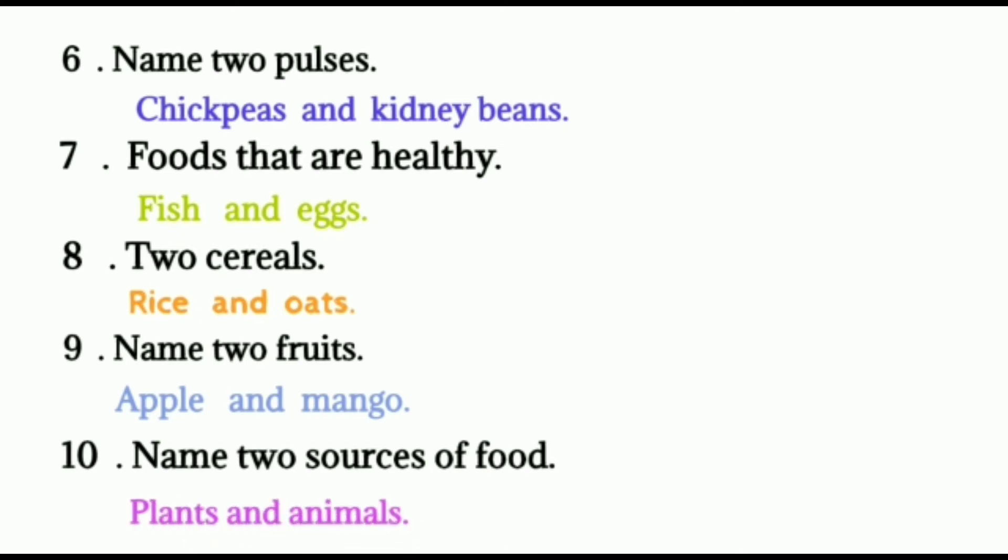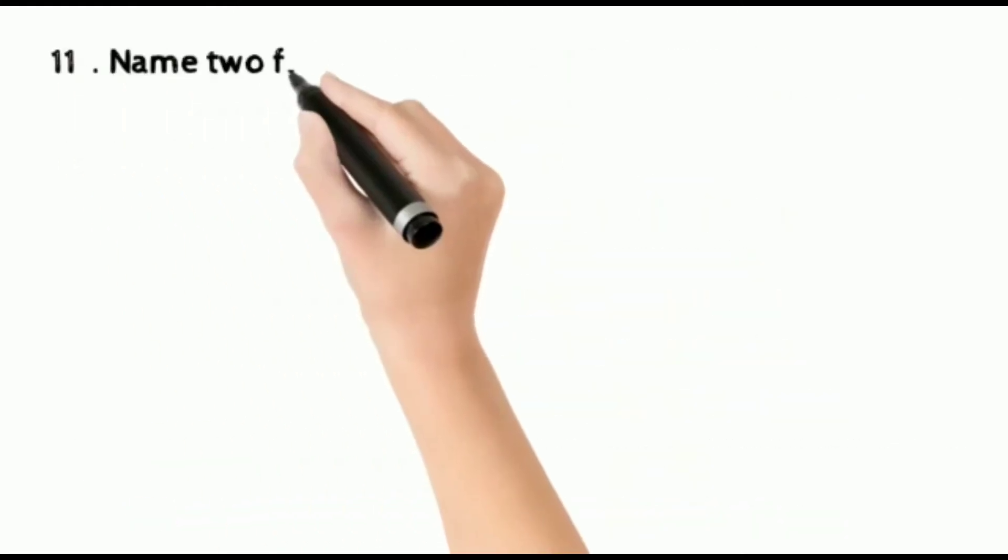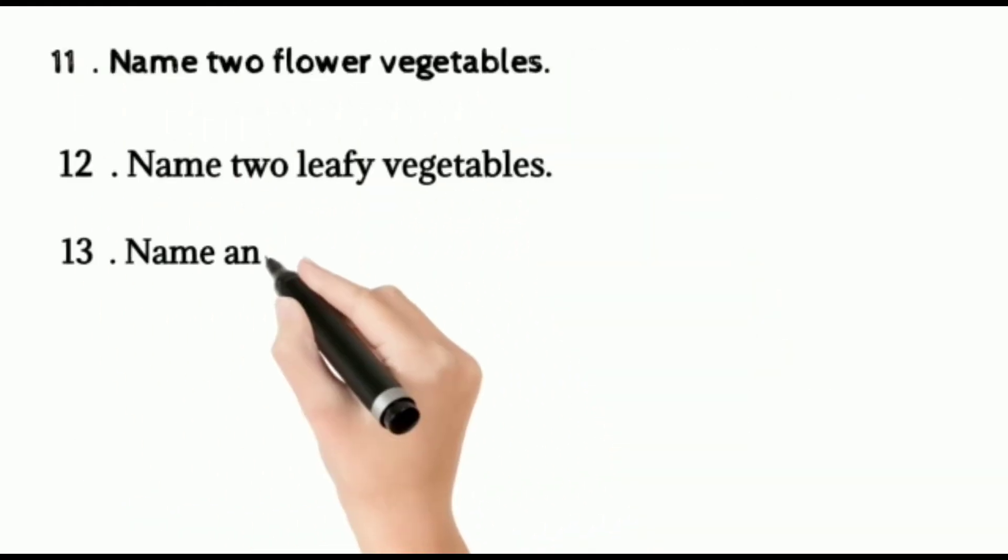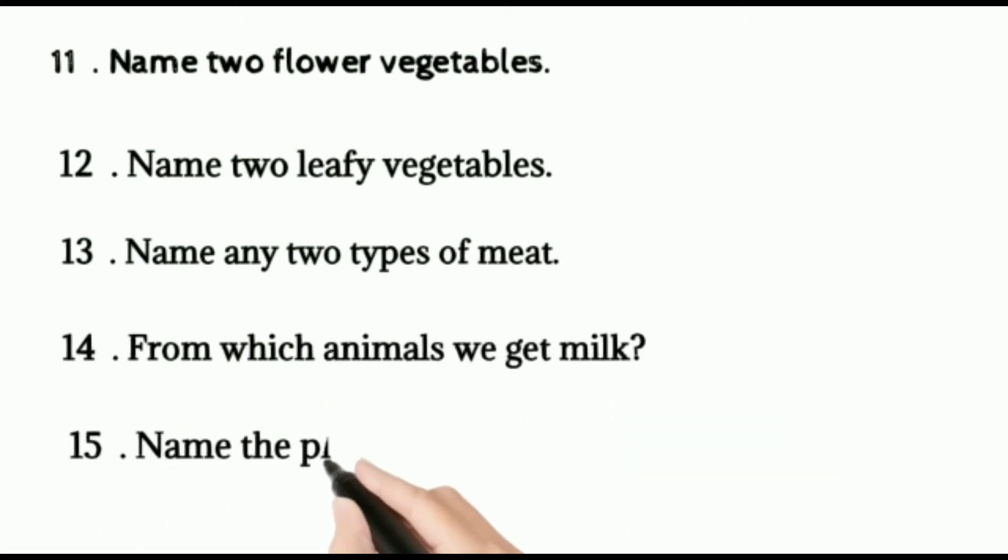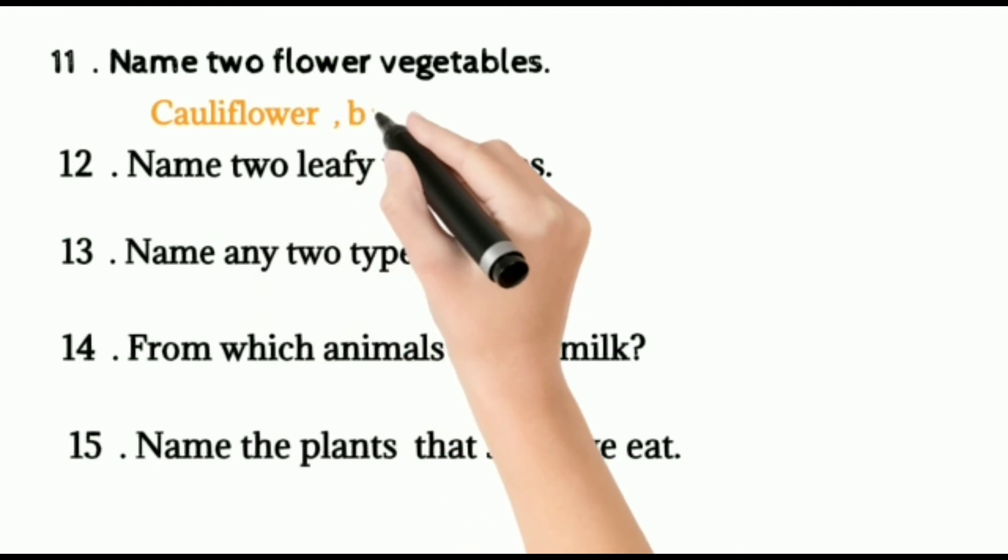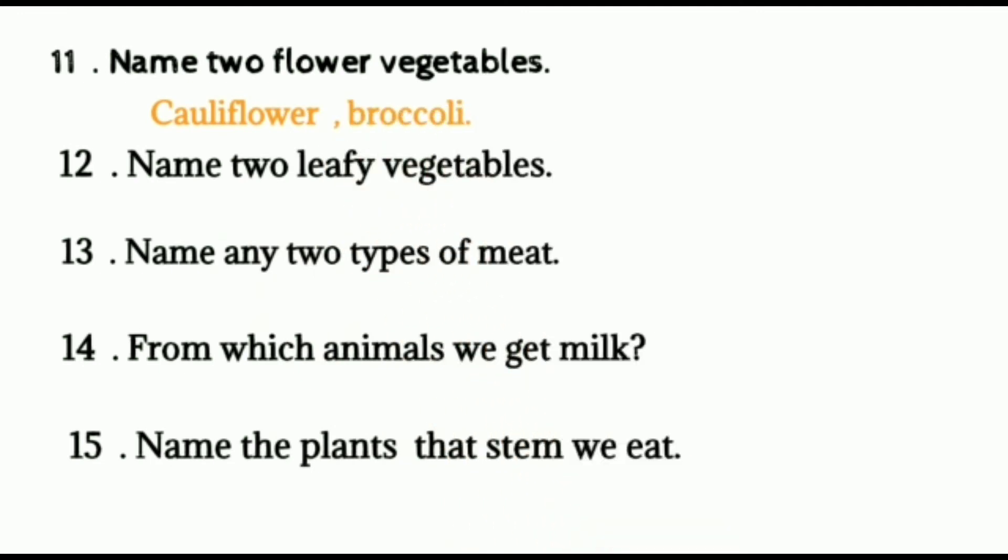Ten, name two sources of food. Mainly plants and animals. Eleven, name two flower vegetables. Mainly broccoli and cauliflower. We eat plant or parts of the plant also. Twelve, two leafy vegetables. Cabbage, spinach, mint leaves, coriander leaves, etc.